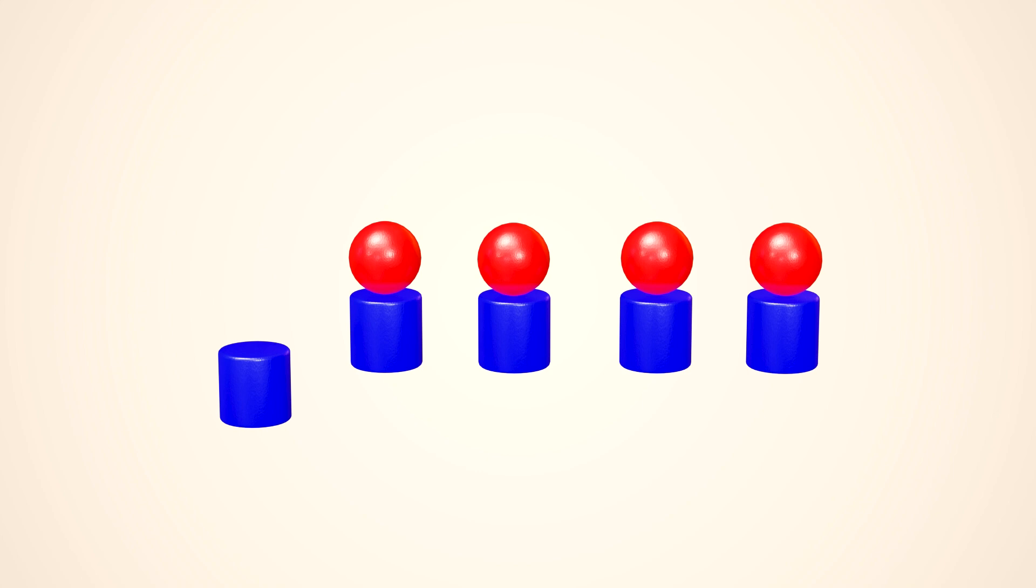Look, there is a blue cylinder that doesn't have a pair with a red sphere, because there are less red spheres. So, there are less red spheres than blue cylinders.